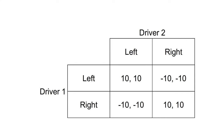What are the Nash Equilibria? If driver two drives on the left, driver one can either successfully drive on the left or drive on the right and crash — they would choose to drive on the left. If driver two drives on the right, driver one can either successfully drive on the right or drive on the left and crash — they would choose to drive on the right. Similarly, if driver one drives on the left, driver two can either successfully drive on the left or drive on the right and crash — they would choose to drive on the left. If driver one drives on the right, driver two can either successfully drive on the right or drive on the left and crash — they'll choose to drive on the right.